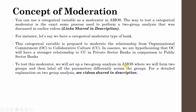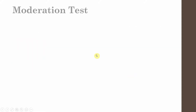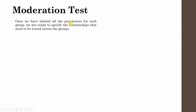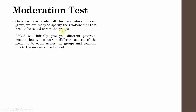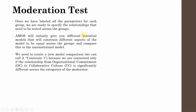We are hypothesizing that organizational commitment will have a stronger relationship to collaborative culture in private sector banks compared to public sector banks. So the type of bank will moderate this relationship. To test this moderator, we will set up a two-group analysis in AMOS, forming two groups and labeling all parameters differently across the groups, just as we did in earlier lectures. Once all parameters are labeled for each group, we are ready to specify the relationship to be tested.